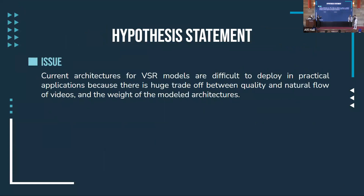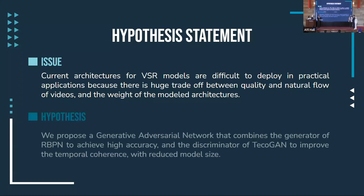The main issue is that current VSR models are hard to deploy because of the heavyweight nature of the models and the trade-off between model weight, video quality, and the natural flow of the generated video. This is why we are proposing a model which integrates two state-of-the-art models: it combines the generator of TQGAN with the discriminator of RBPN to improve temporal coherence and maintain the quality of the generated video. Part of the training occurs in the discriminator, which keeps the model size constant and enhances video quality.